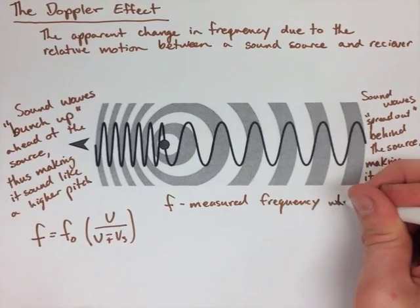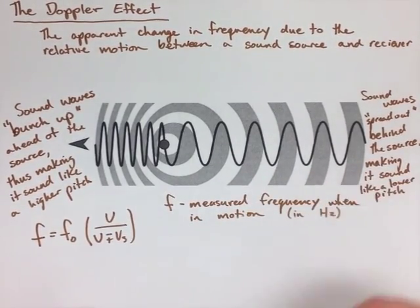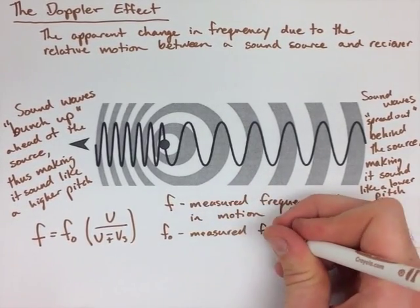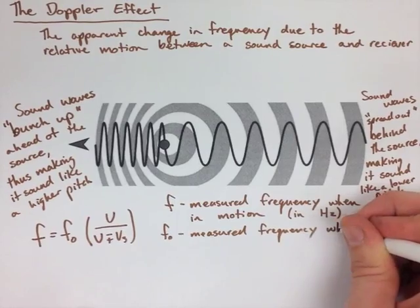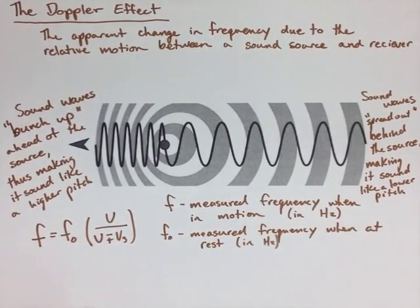We have a positive and a negative on the bottom of that fraction, and we'll explain it in a second. f is the frequency when in motion, f0 is the frequency at rest, and these are both measured in hertz. V in this equation is the calculated speed of sound, and vs is the speed that the source is moving. These are both measured in meters per second.